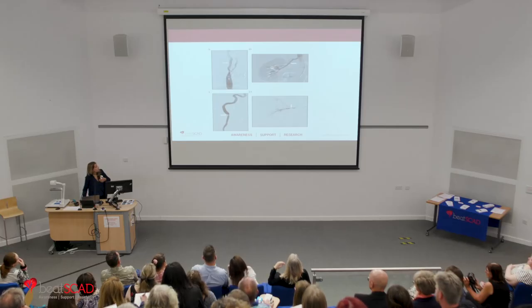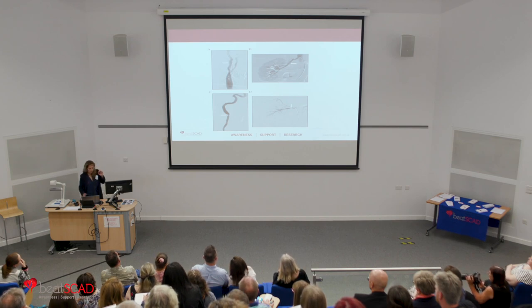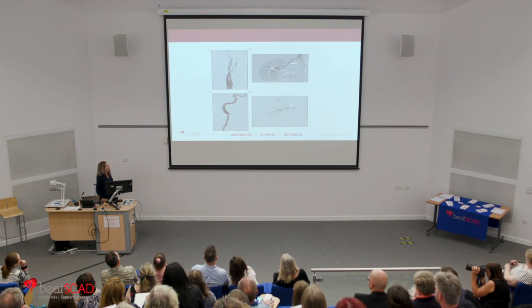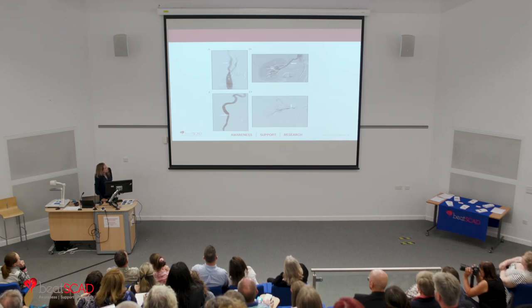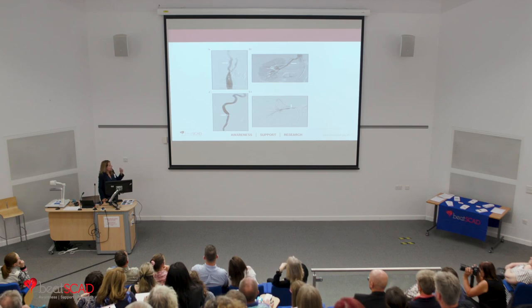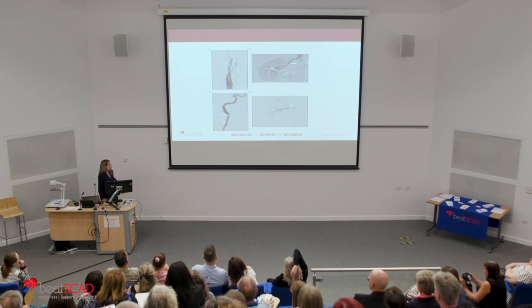This diagram shows how FMD can look very different in different territories and arteries, and it also depends on the type of FMD. Panel A shows the typical beading appearance, which is a bit different to panel B. In panel C there is a focal stenosis — a narrowing within the artery — and similarly in panel D. This is because there are different types of FMD that we are now aware of.